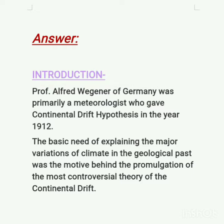Professor Alfred Wegener was a German meteorologist who postulated his theory in the year 1912. But actually, the continental drift hypothesis by Wegener was published in the year 1922 — that is, it took almost 10 years to get published. Wegener's motive behind the promulgation of this theory was that he wanted to explain the major variations in climate over a long period of geological history — how the climate changed over a period of time.